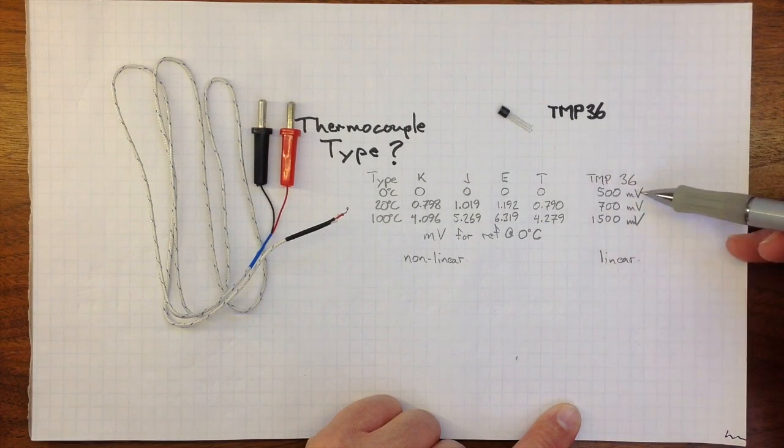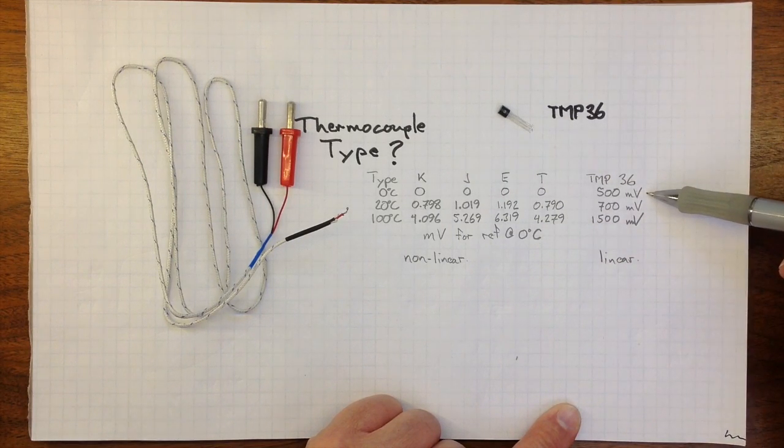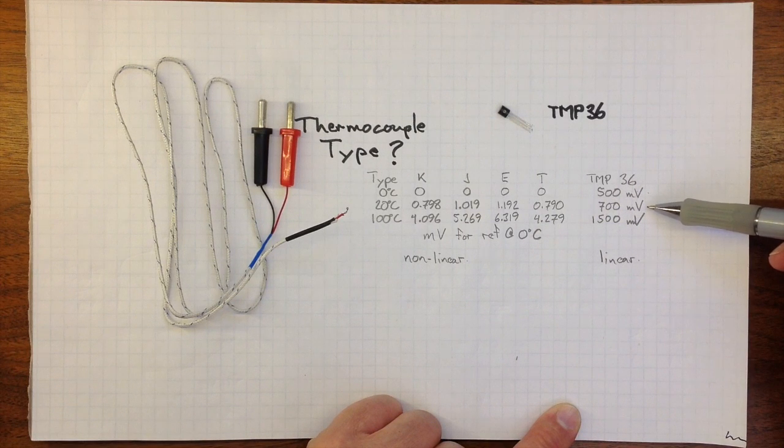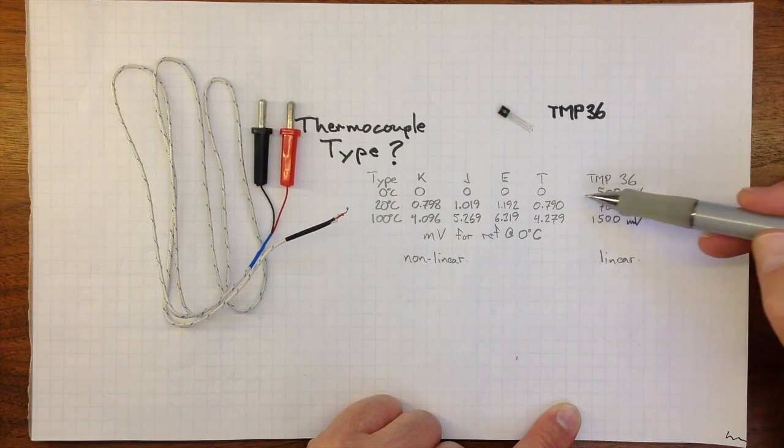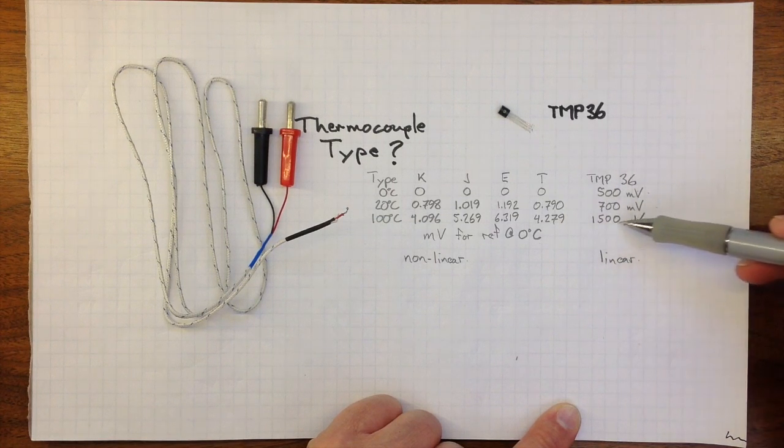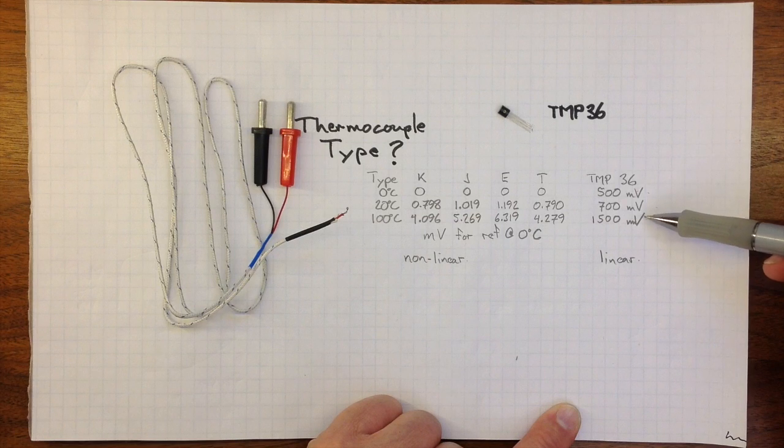So that at zero degrees Celsius, we'll see 500 millivolts, half a volt. At 20 degrees Celsius, 700 millivolts, that's 200 millivolts higher, 10 millivolts for every degree Celsius. And at 100 degrees Celsius, we'll see 1500 millivolts, one and a half volts.